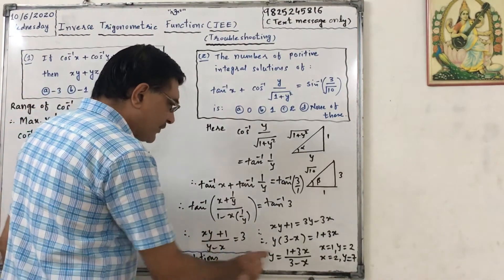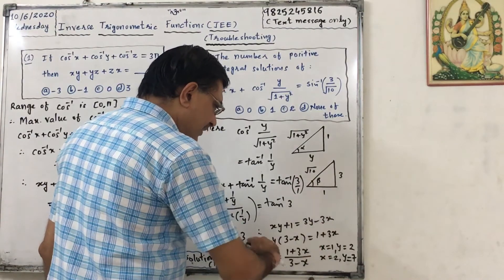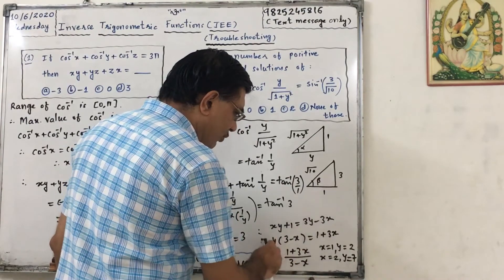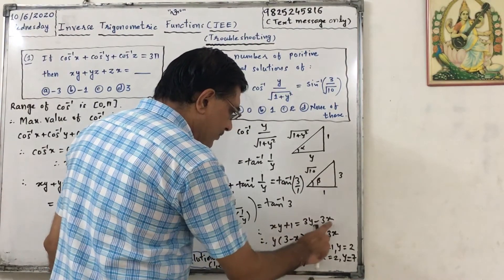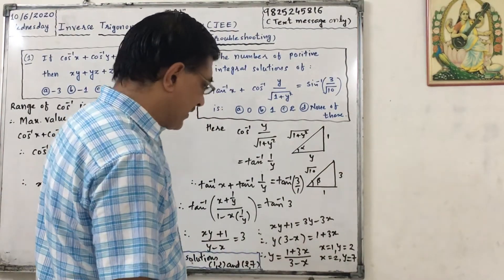So xy plus 1 equals to 3y minus 3x. Taking 3x here and this xy at that side, in that case y will be common, 3 minus x equals to 1 plus 3x. So y will be equal to 1 plus 3x upon 3 minus x.